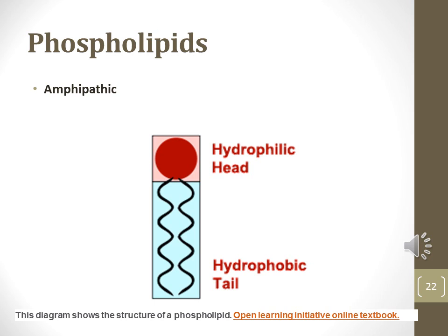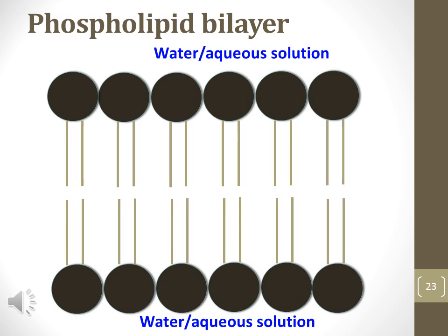When a bilayer is formed, the phospholipids form into two layers facing one another. When a micelle is formed, the phospholipids arrange themselves into a ball with the polar heads facing the outside and the nonpolar tails facing toward the inside of the ball-like structure. Do you remember the universal saying, like dissolves like? The large hydrophobic tails of phospholipids will dissolve into each other so there is a thick hydrophobic layer surrounded by the two thin hydrophilic layers.